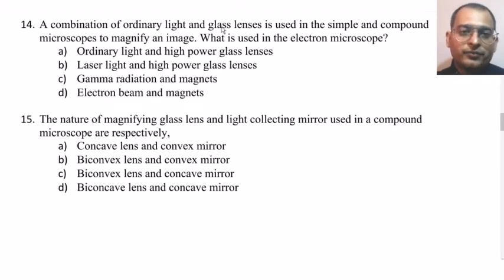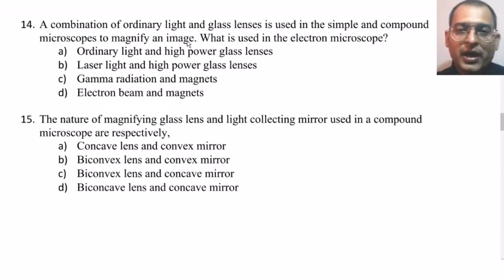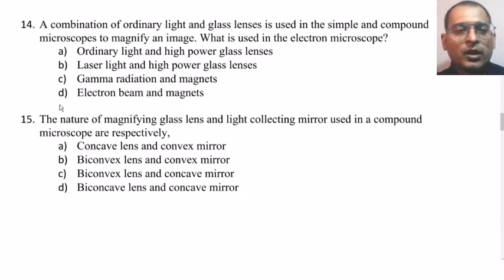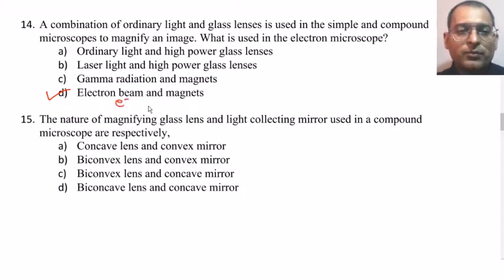A combination of ordinary light and glass lenses is used in simple and compound microscopes. What is used in the electron microscope? The answer is electron beam and magnets. An electron beam is used, and its focal length and adjustments are done with the help of powerful magnets.